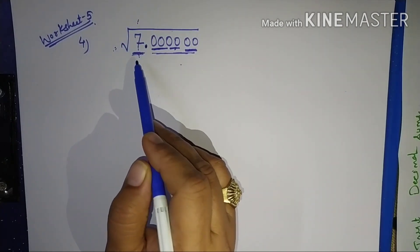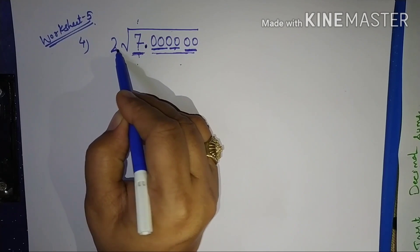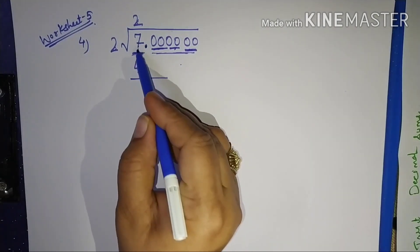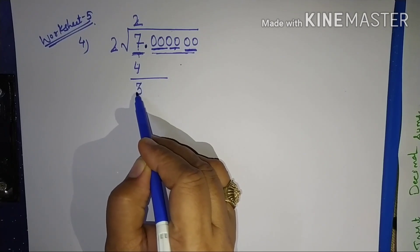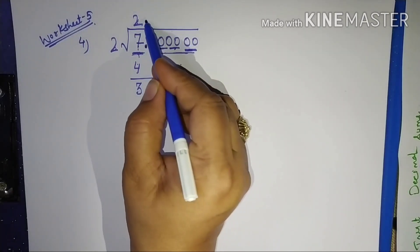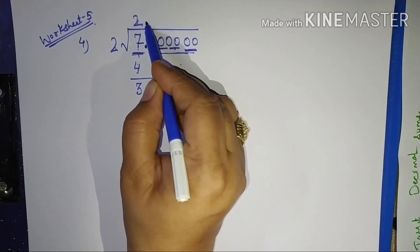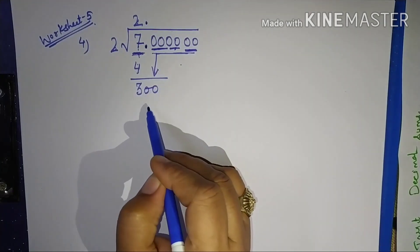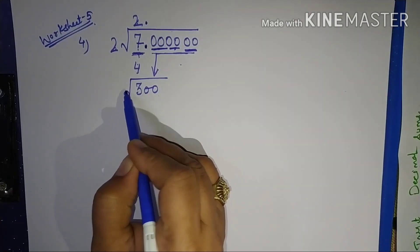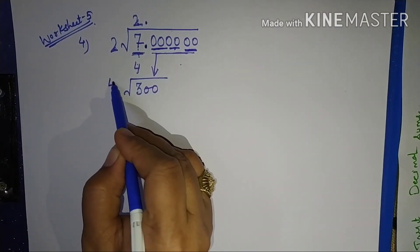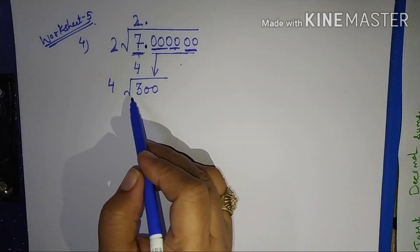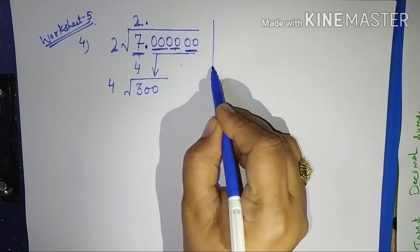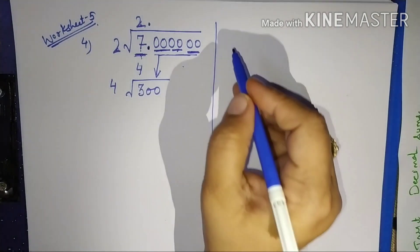So it is 7: 1×1=1, 2×2=4, 3×3=9 — which is bigger. So let me start with 2. 2×2=4. 7 minus 4 is 3. The decimal will be shifted here in the quotient. Now I take my first pair of zeros. 2 plus 2 is 4, so now I have 300 and my new divisor starts with 4.